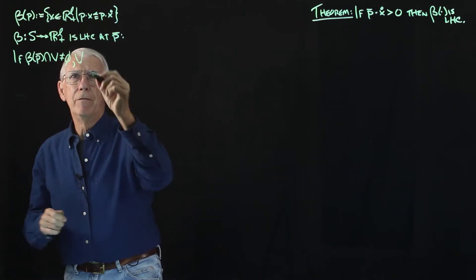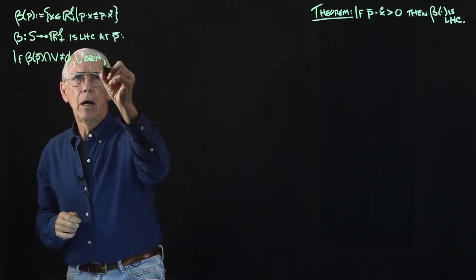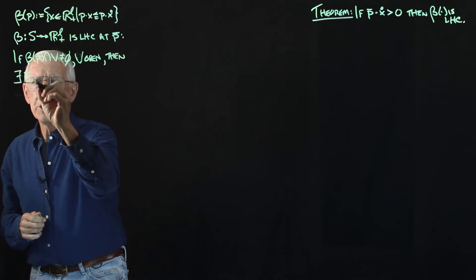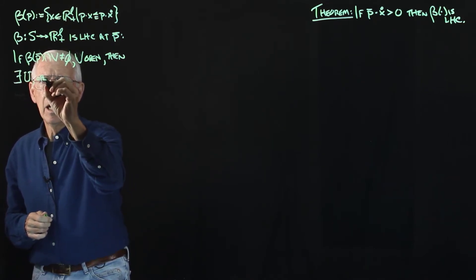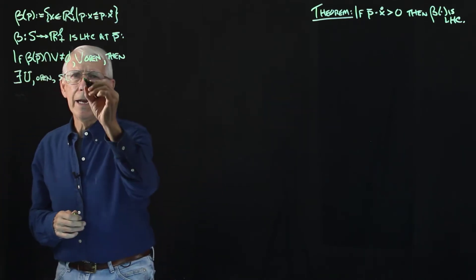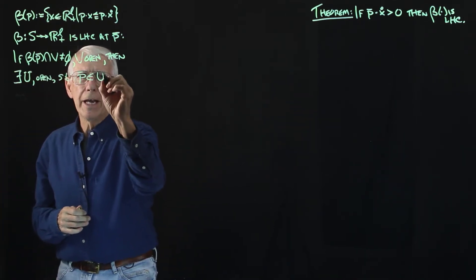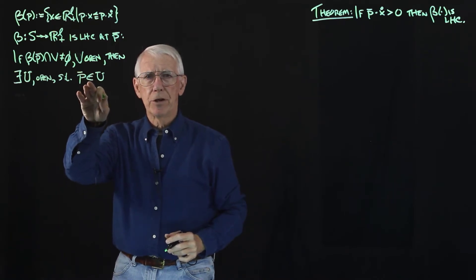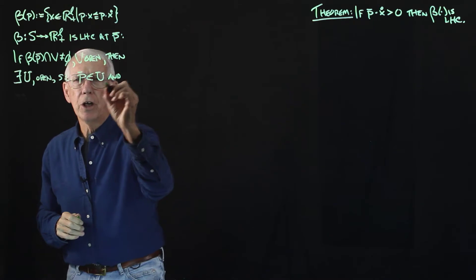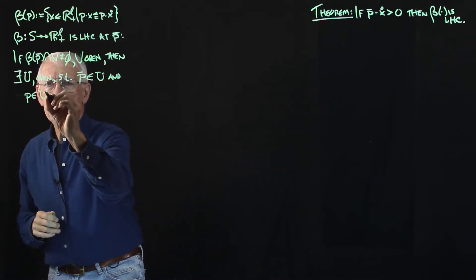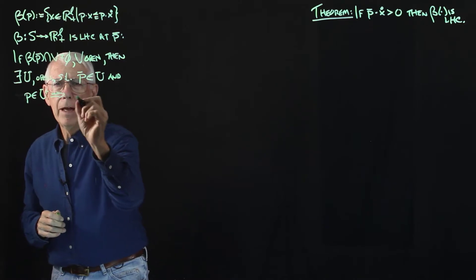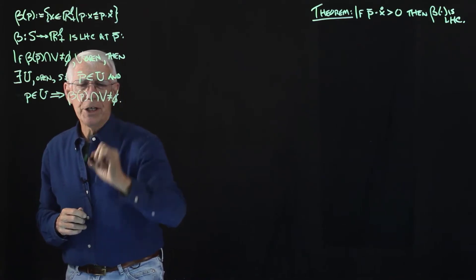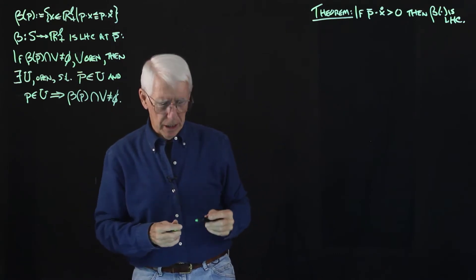If V is open, then it has to be the case that there will be an open set in the domain that includes P bar — because it's got to be a neighborhood of the reference price list P bar — and also that every price list in that neighborhood also has a budget set that intersects this open set, giving a non-empty intersection.